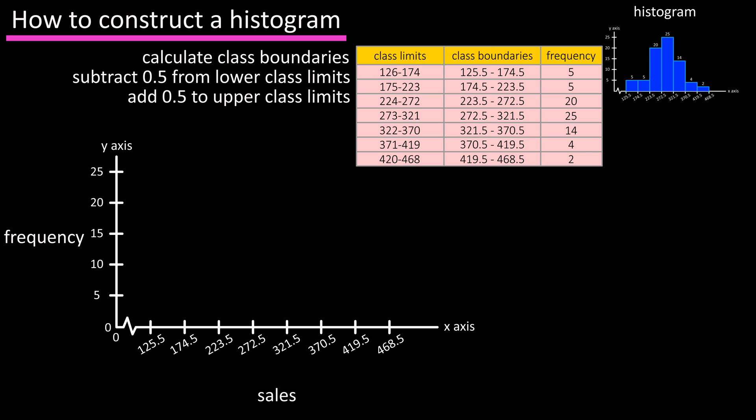Next we want to mark our frequency above the class boundaries. So for class 1, we have 5 in respect to the y-axis values. Then we can draw our lines in for the first bar, and fill it in. Next mark the frequency for class 2, which is also 5 in respect to the y-axis, and draw in the lines and fill in the bar.